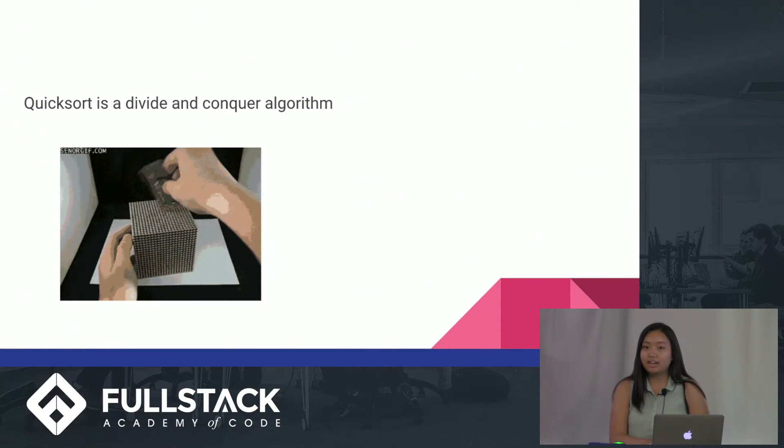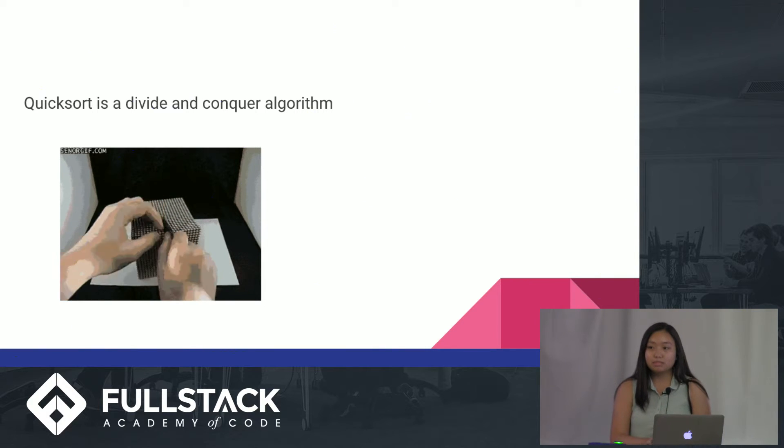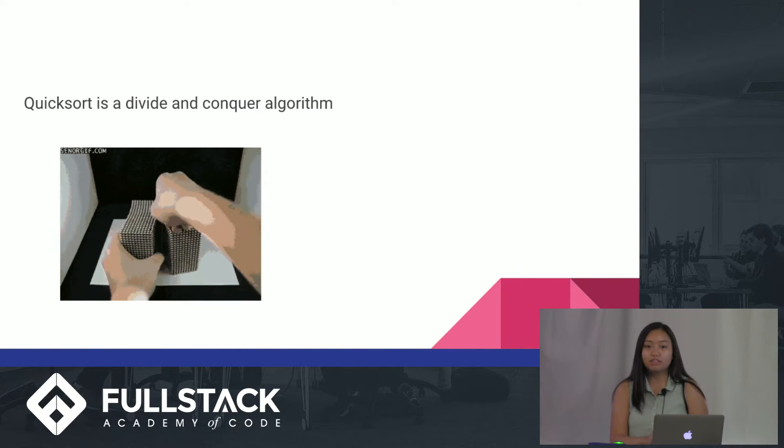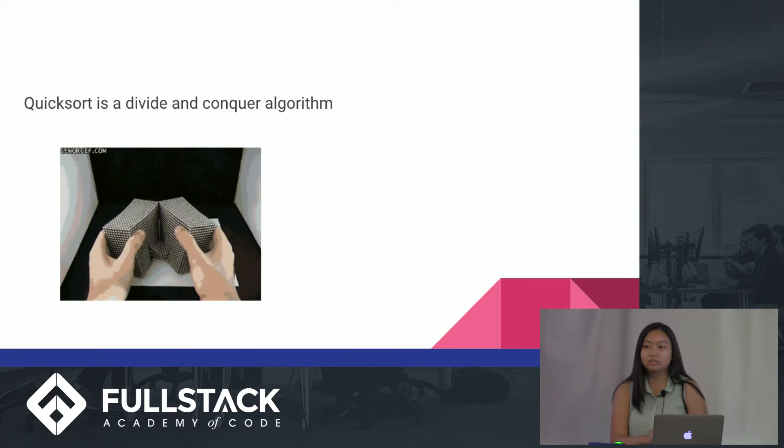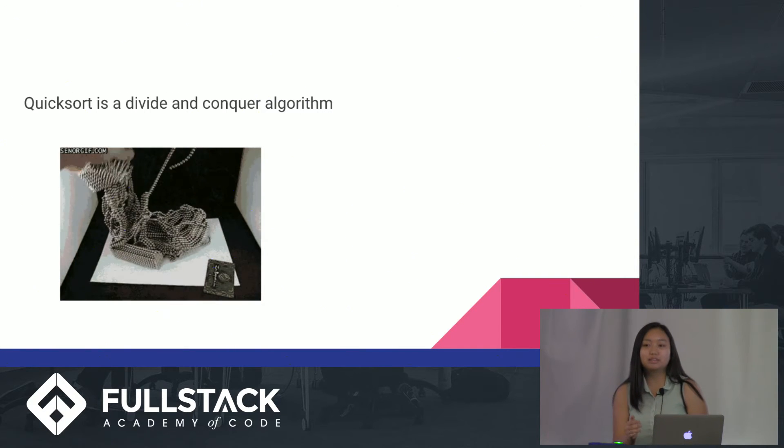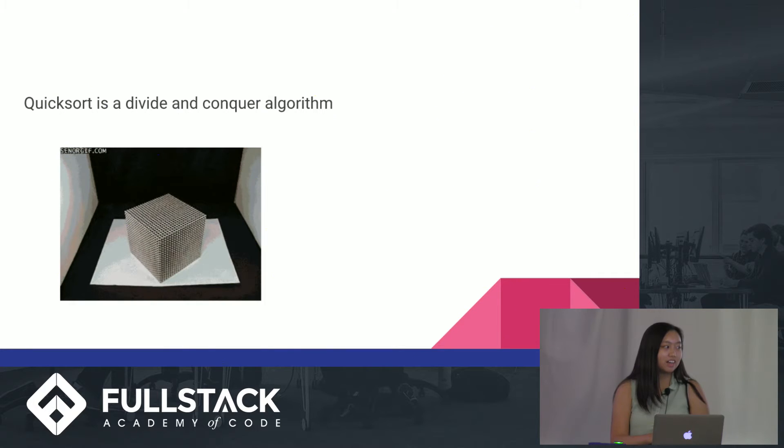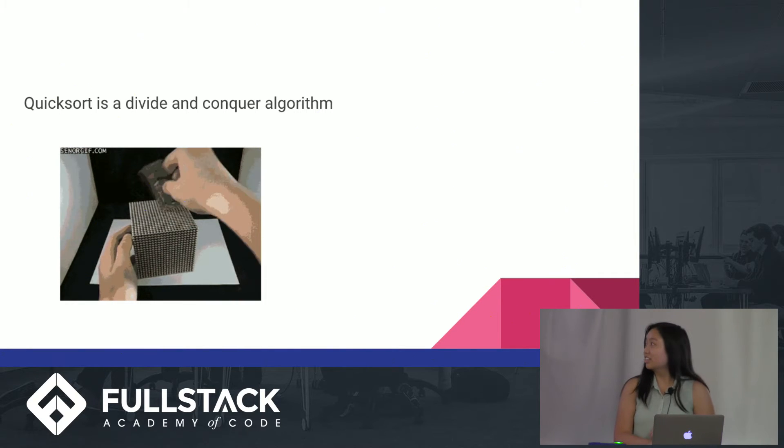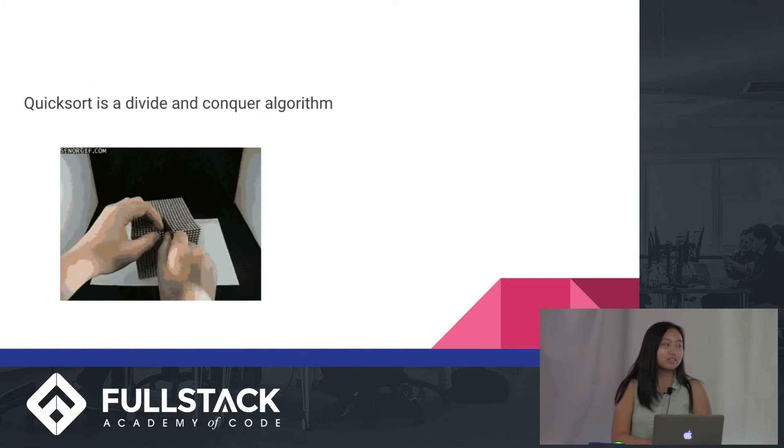QuickSort is a divide and conquer algorithm, which basically means that it tries to solve a large problem by dividing it into smaller pieces, solves those, and then puts it back together to solve a large one. Obviously this guy was not good at that, but QuickSort is really good at it.